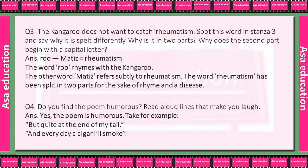Ruh-matism — rheumatism. The word 'Ruh' rhymes with 'kangaroo'. Jo pehla word hai 'Ruh', wo rhyme karta hai kangaroo se. The other word 'matiz' refers subtly to rheumatism. Aur jo doosra word hai 'matiz', wo refer karta hai rheumatism ko. The word rheumatism has been split in two parts for the sake of rhyme and to refer to a disease. Toh is rheumatism word ko do parts mein isliye split kiya gaya hai — ek toh rhyming karne ke liye, doosra disease ke baare mein batane ke liye.